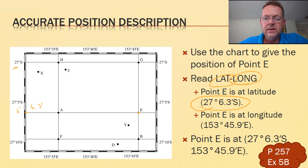Let's consider the longitude now of point E. So we draw our line straight through, and it's up here, and it's just before the previous one. So if that's 45, that one's 46, it's got to be 45.9. And let's fill in the rest, 153 degrees, and 45.9 east.